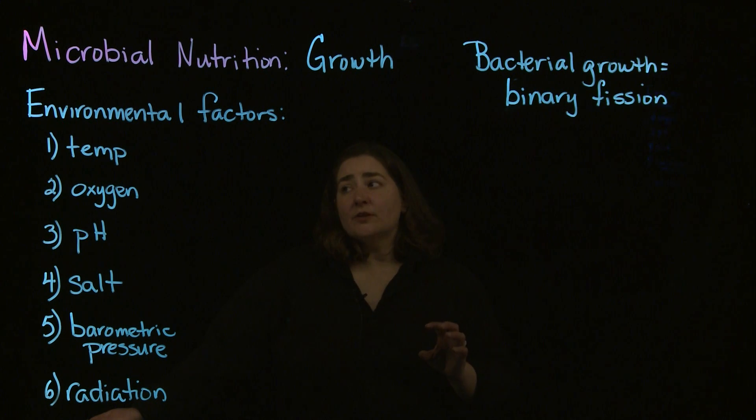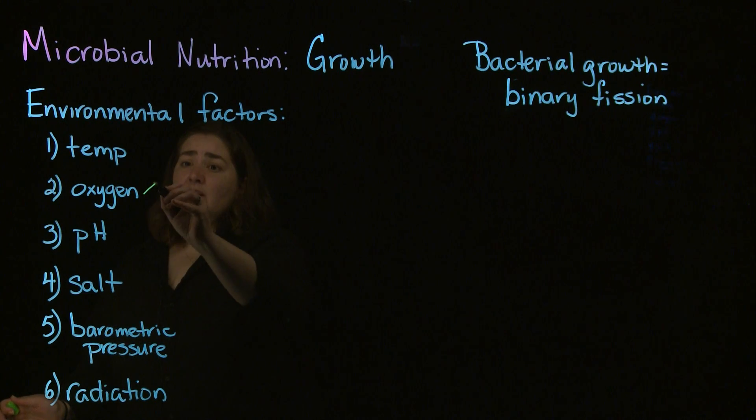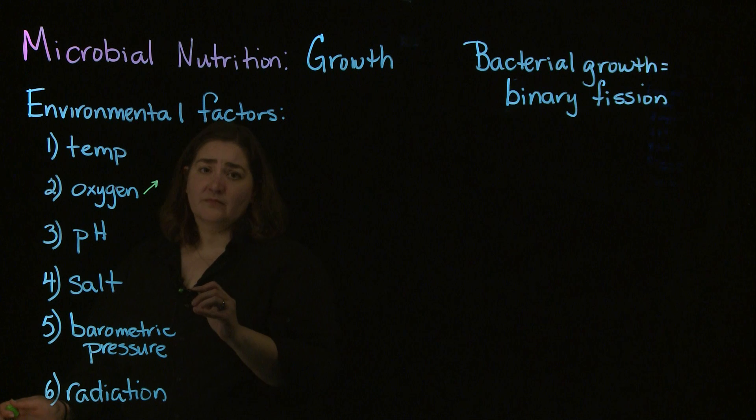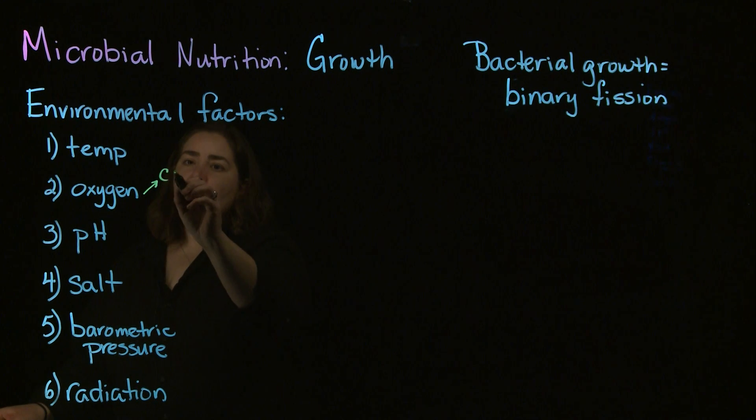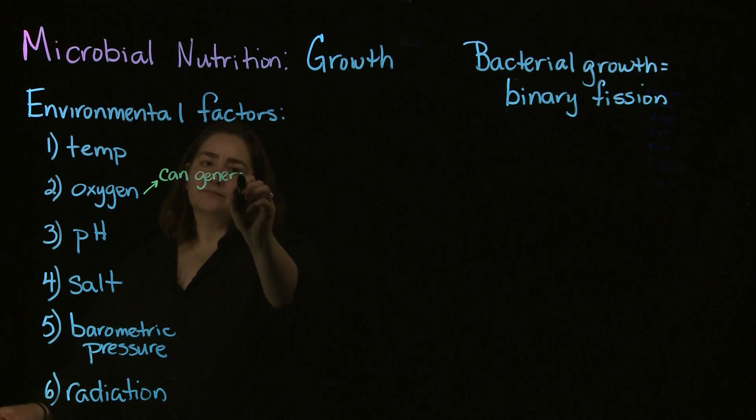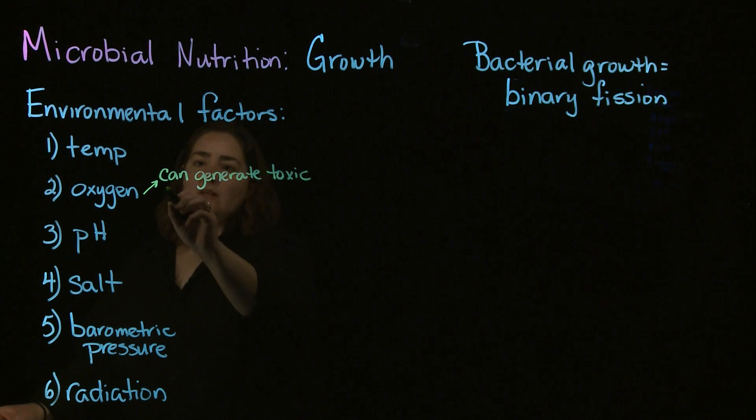The next major category of environmental factors is oxygen use. One of the key things about oxygen is it can generate some toxic byproducts within a cell.